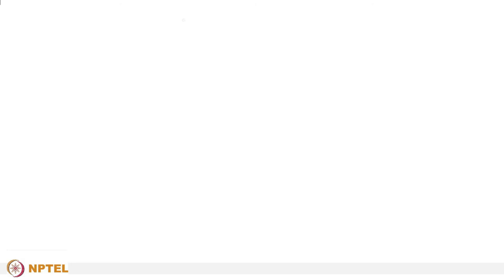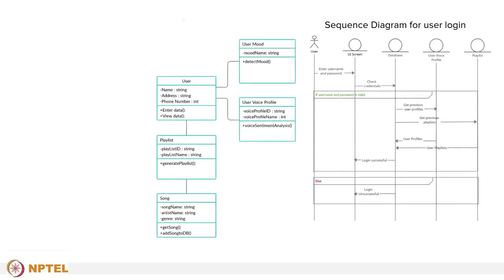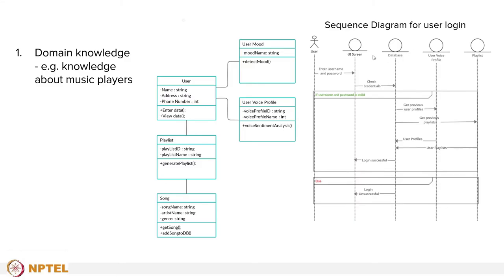Let's see how an experienced software designer tries to comprehend different diagrams in a design, using the example of the mood-based music player. First of all, one needs an understanding of the domain. Problem domain knowledge refers to knowledge about the context for which the design has been developed. For example, students should be familiar with how a music player works.